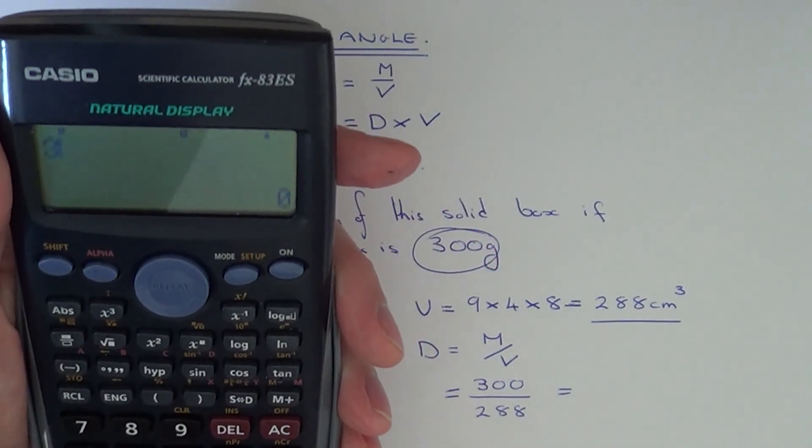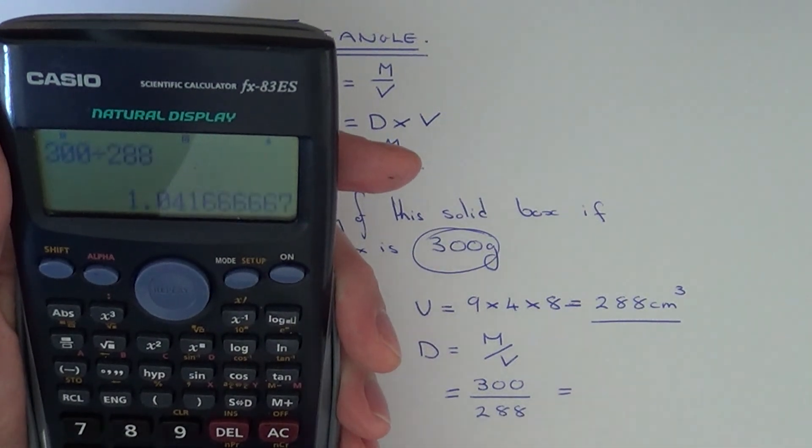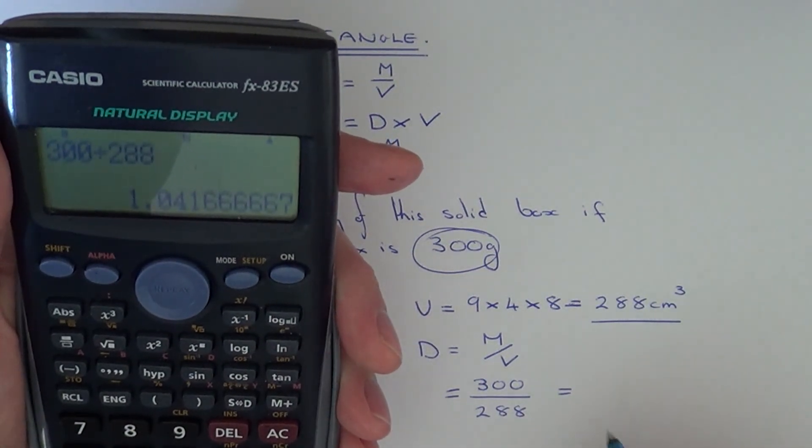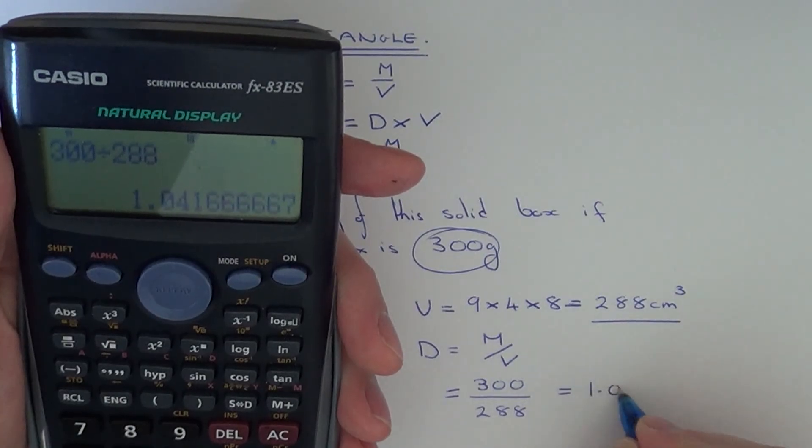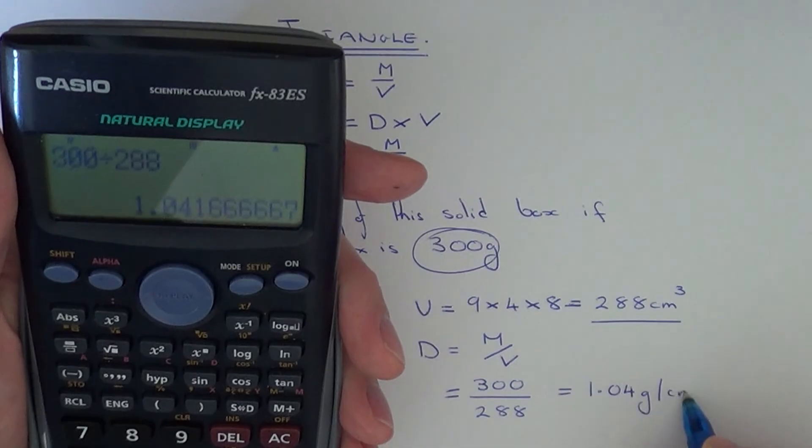So 300 divided by 288. That gives you 1.04 grams per centimetre cubed.